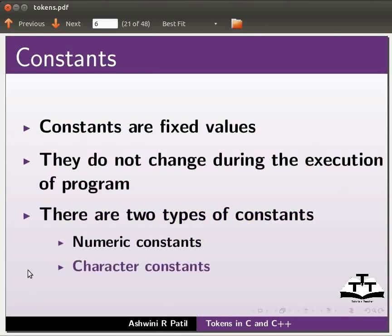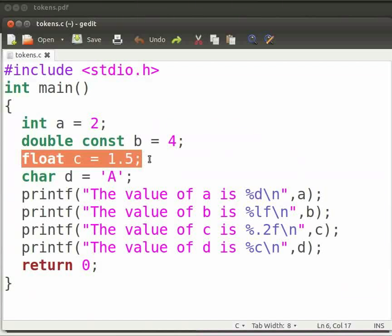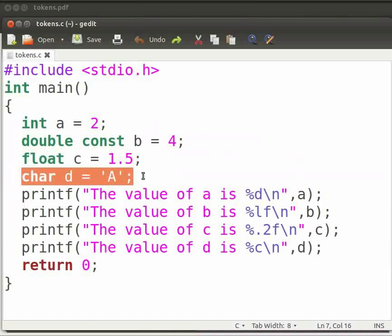Now come back to our program. Here, float is a data type of variable C. We have assigned it a value of 1.5. Data type is a finite set of values along with a set of rules. Here, d is a variable. Char and single quotes suggest that we are dealing with a character. As a result, d is a character variable storing the value a.